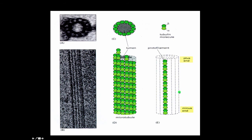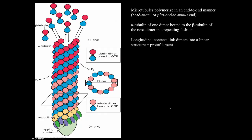Microtubules polymerize in an end-to-end manner, sometimes called the head-to-tail or plus-end-to-minus-end manner. The plus and minus designations do not relate to charge at all — they simply indicate a head and a tail region. Alpha tubulin of one dimer binds to beta tubulin of the next dimer in a repeating fashion, creating longitudinal contacts that link dimers into the linear protofilament structure.